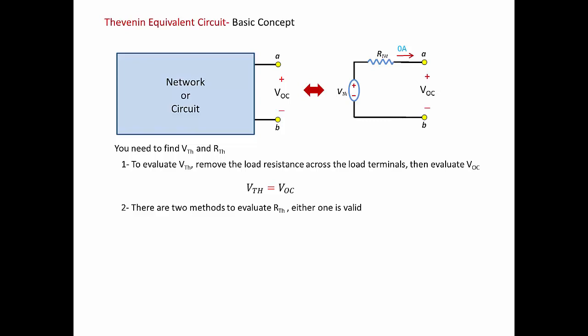Now we want to find R-Thevenin. There are two methods or approaches that can be used, and either one is valid. Usually for an exam, lab, or assignment, you only need to use one method — sometimes one is easier than the other. The first method is called the short circuit method. You short the terminals A-B and then find the short circuit current through it. Let's look at the equivalent network to understand intuitively why this works.